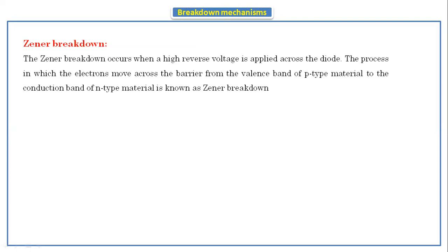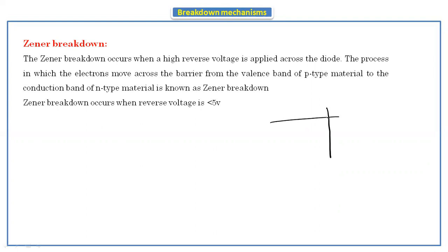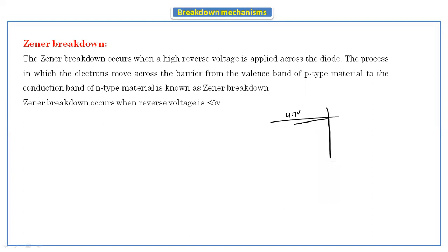The Zener breakdown occurs when a high reverse voltage is applied across the diode. The process in which electrons move across the barrier from the valence band of the P-type material to the conduction band of the N-type material is known as Zener breakdown. This breakdown occurs when the reverse voltage is less than 5 volts. In the reverse bias characteristics, around 4.7 volts is taken as the breakdown voltage. Up to that voltage there is very little current increase, but after reaching that voltage the current increases drastically while the voltage remains constant.